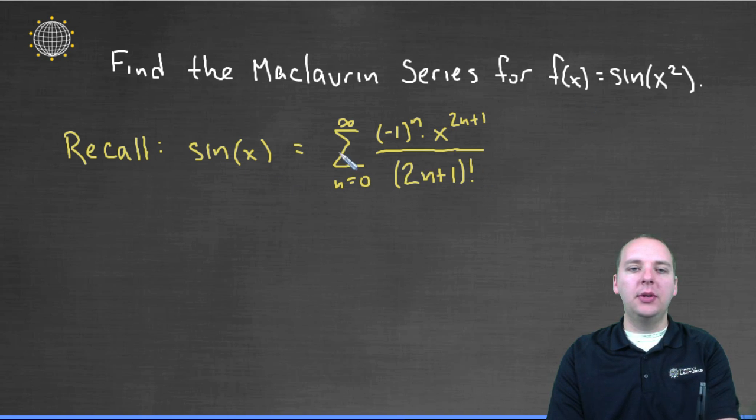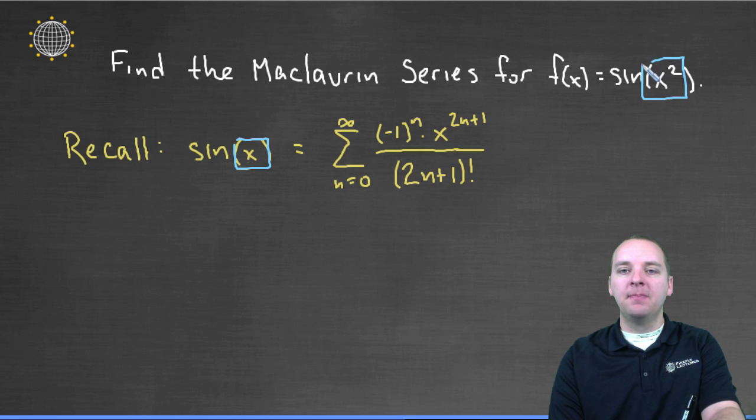Now you look at this and you say, well Devin, sure they're close, but they're not the same. Well, I would agree with that, but here's how we would fix this discrepancy. First of all, notice where the difference happens. This is for sin(x). We want the Maclaurin series for sin(x²).